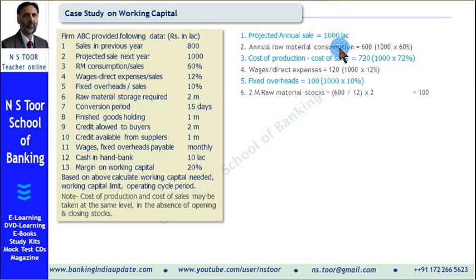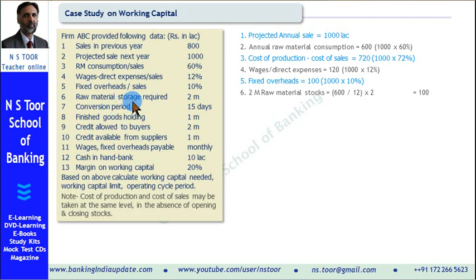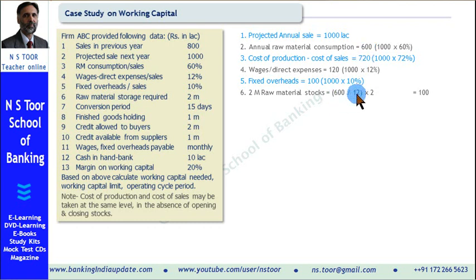Now we shall calculate raw material holding, stock in process holding, and finished goods holding. Raw material storage period is 2 months. Raw material is directly related to purchase, so 2 months of raw material is required. Total raw material consumption is 600 — this much raw material will be purchased over 1 year. For 1 month it will be 600 divided by 12 = 50 lakh. For 2 months the holding amount will be 100.